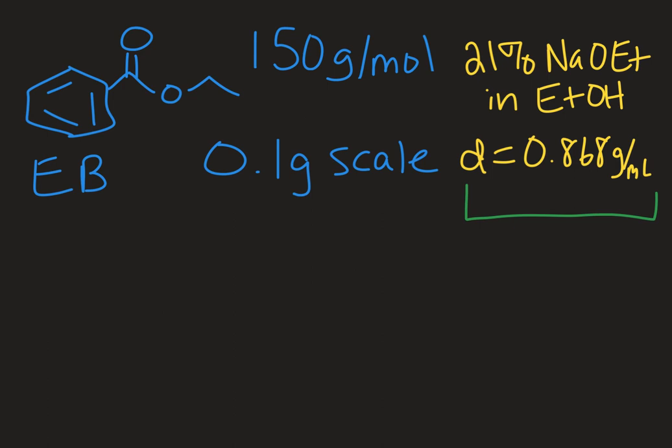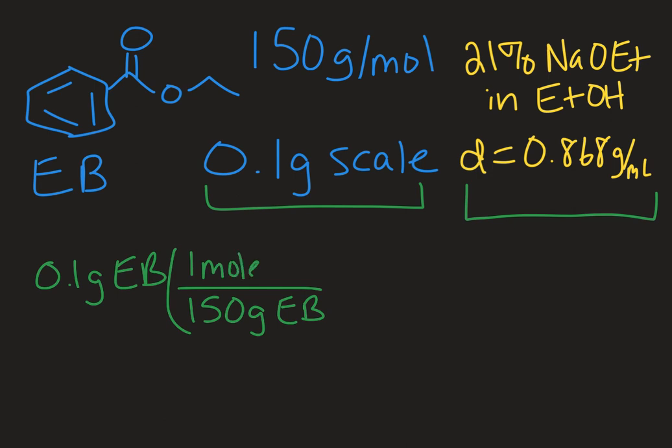So I'm going to start with our starting material, ethyl benzoate. We're going to do this on a 0.1 gram scale. So I have 0.1 grams of ethyl benzoate that I'm going to weigh out. In order to compare apples to apples, I need to be in moles. So I'm going to use the molar mass of ethyl benzoate. There are 150 grams of ethyl benzoate in one mole of ethyl benzoate. And so that will get me into moles.